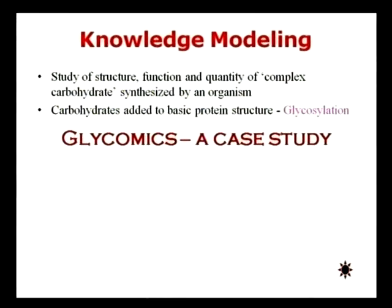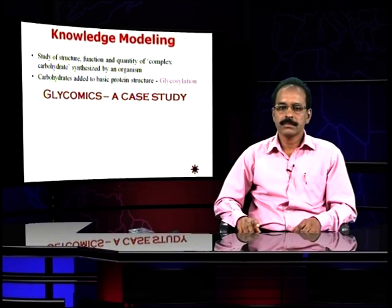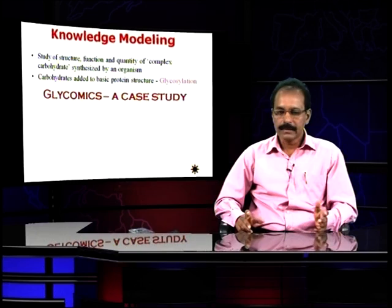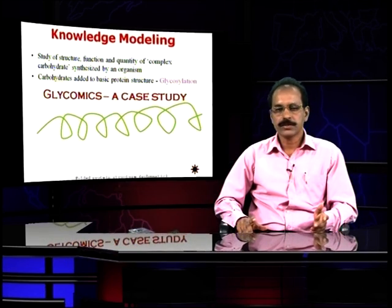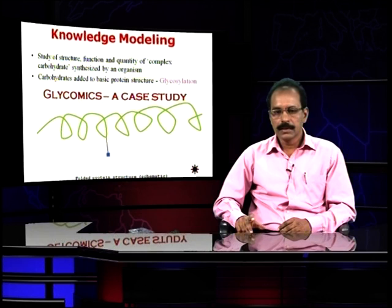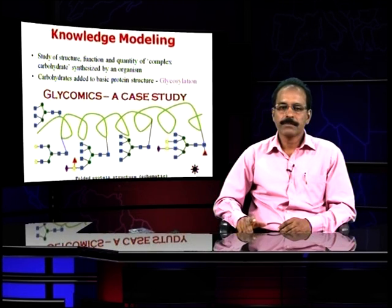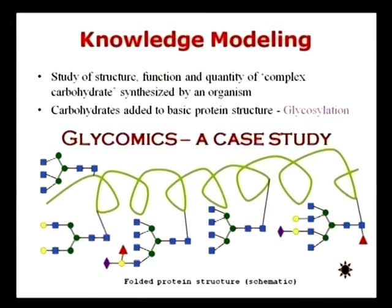There is knowledge modeling — the study of structure, function, and quantity of complex carbohydrates synthesized by an organism. Carbohydrates added to basic protein structure is called glycosylation. Glycomics is a case study here — it can be a model or knowledge modeling.